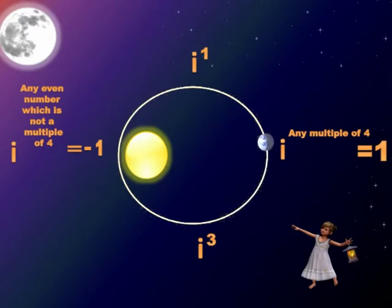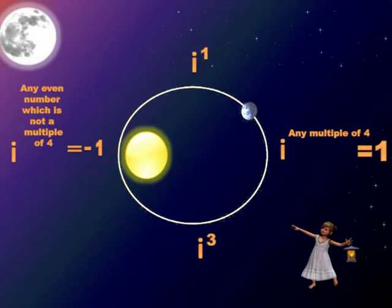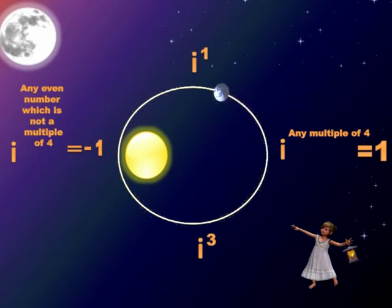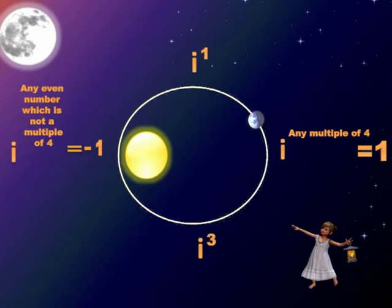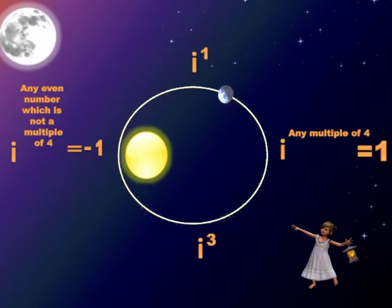Now, i raised to any even number which is not a multiple of 4 — those even numbers which are every alternate even number starting from 2: take 2, leave 4, take 6, leave 8, take 10 — so i raised to 6, i raised to 10, and so on will all be equal to minus 1.